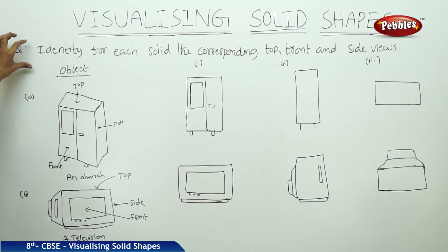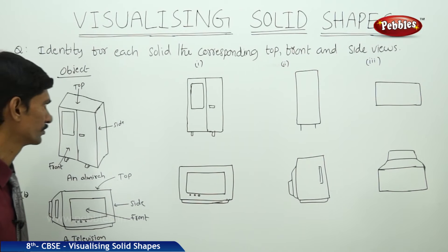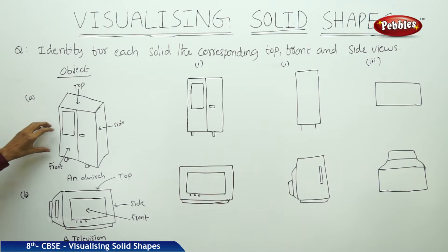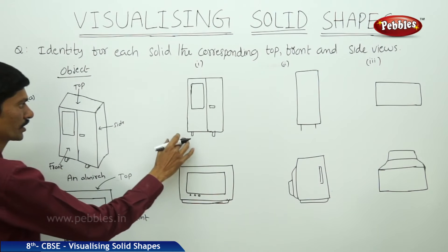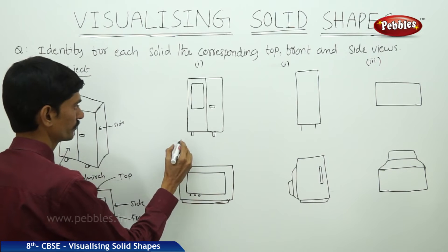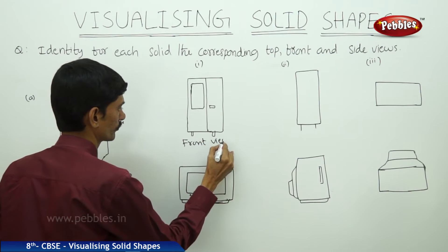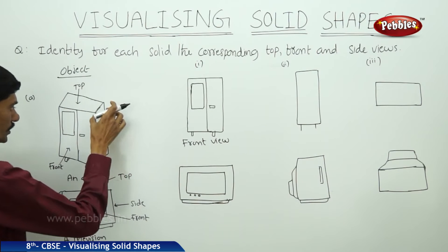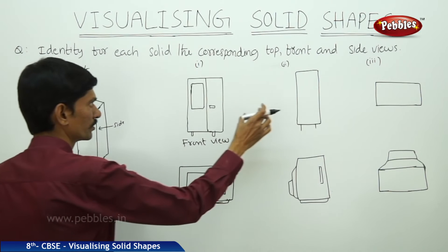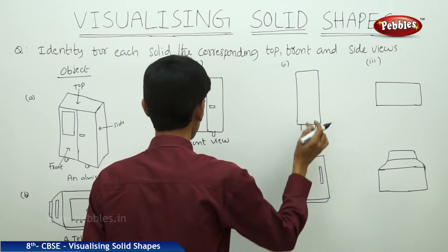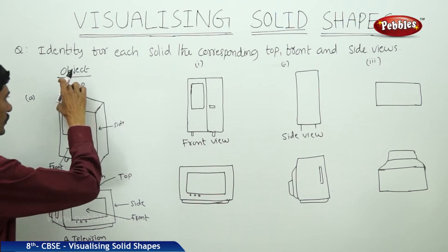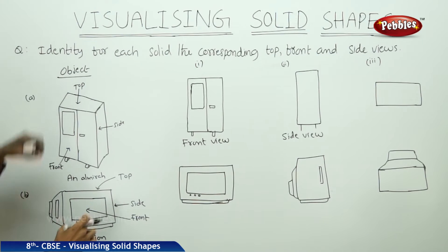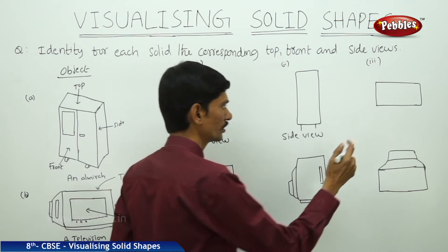Let us see the next question: identify for each solid the corresponding top, front, and side views. There is an almirah here. If you observe the first figure, we can see the front side of the almirah, so it is the front view. The second figure shows the side — it is a rectangular shape — so it is the side view of the almirah.